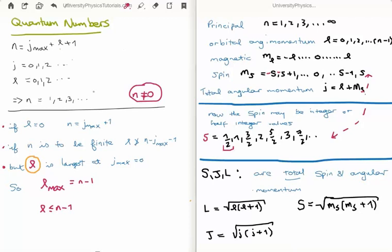Also, L technically can be any number, it can be an infinite number if you like. But we want N to be finite. So if N is to be finite, L cannot be greater than N minus J max minus 1. Also, L is largest at J max is equal to 0.